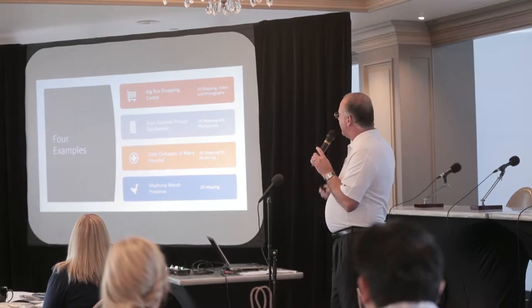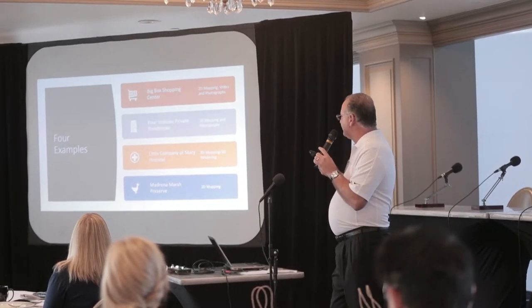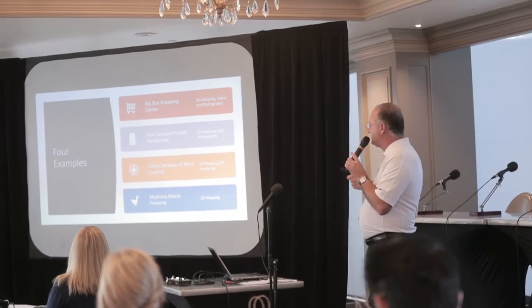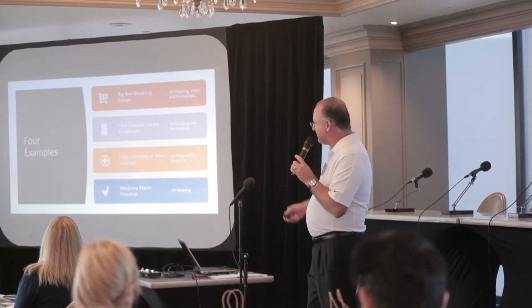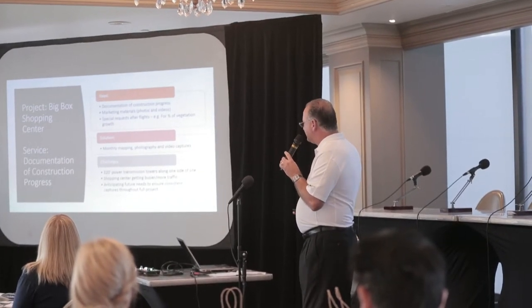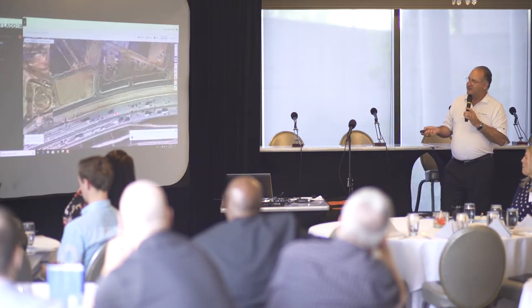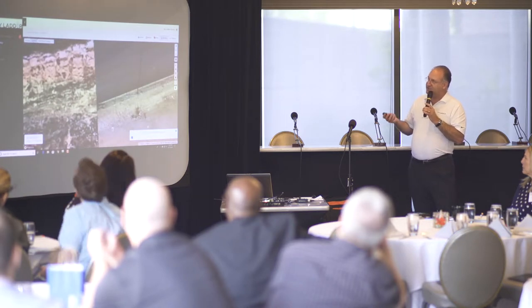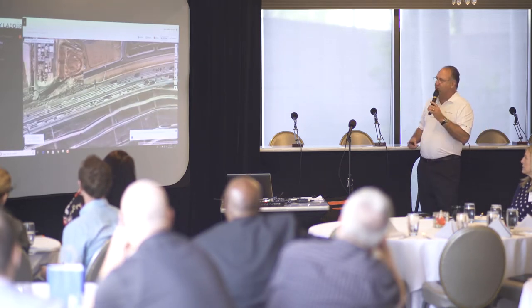I have four examples to walk through: a shopping center I've been monitoring, the Four Seasons private residences in Beverly Hills, a hospital, and a wildlife preserve — a very diverse set. I pre-recorded video so I'll walk through it as it plays. This is the 60 Freeway area — I'm not flying over the freeway, but this shows the resolution. On the left is Google Earth, and you can see the incredible resolution a drone provides in comparison.